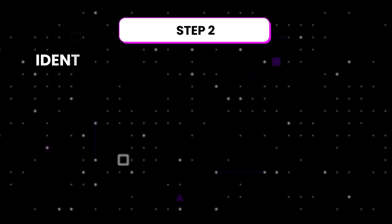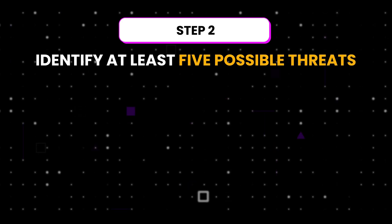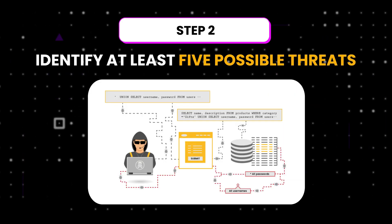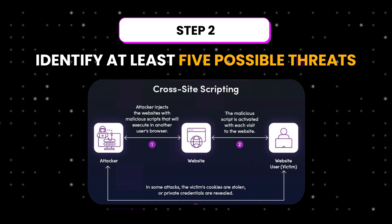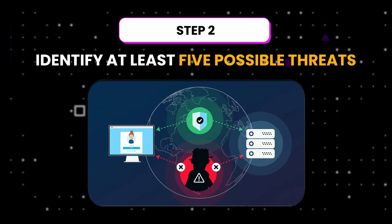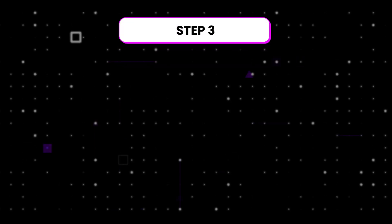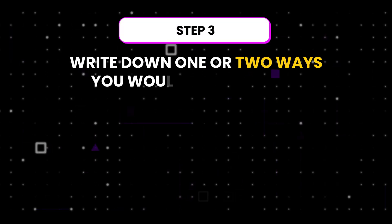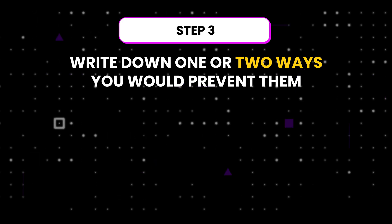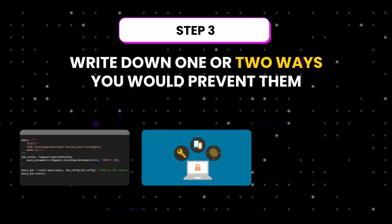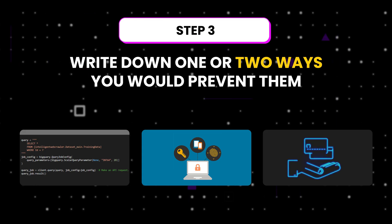This gives you a clear picture of where data is flowing. Step two: identify at least five possible threats — for example, SQL injection in the login form, cross-site scripting on product pages, credential stuffing on login attempts, and man-in-the-middle attacks. Step three: for each threat, write down one or two ways you would prevent them, such as using parameterized queries, adding multi-factor authentication, or using secure payment gateways that handle credit card data. Put all of this into a short security design document — even half a page saying 'here is how data flows, here is what could go wrong, and here is how you would stop it' is enough to prove you are thinking like a security engineer.